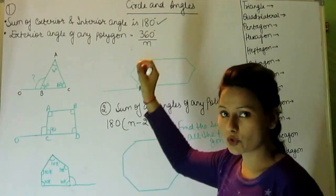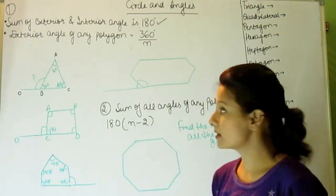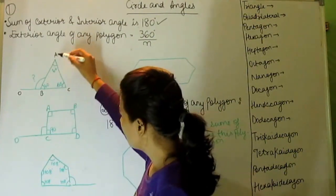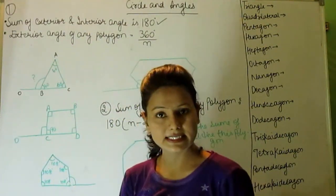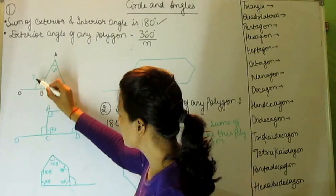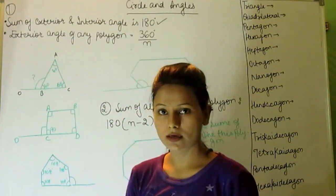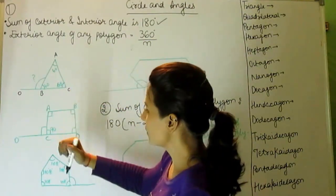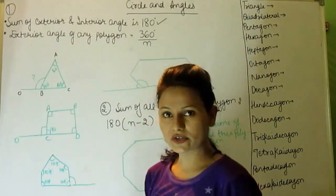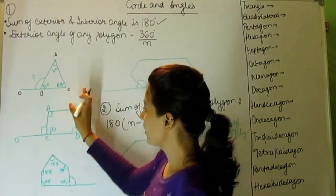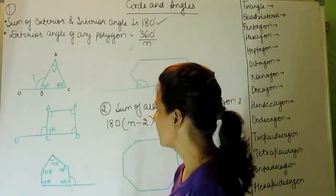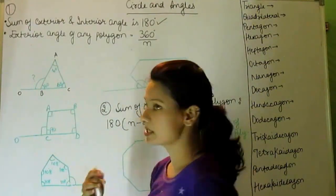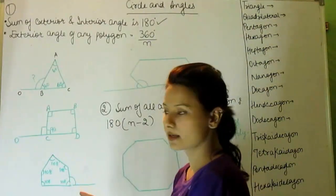Let's suppose we are given that all angles are 60 degrees, and we have to find this exterior angle. As we can see, this is an equilateral triangle — all sides are equal. We have to find the exterior angle, which is outside this triangle.